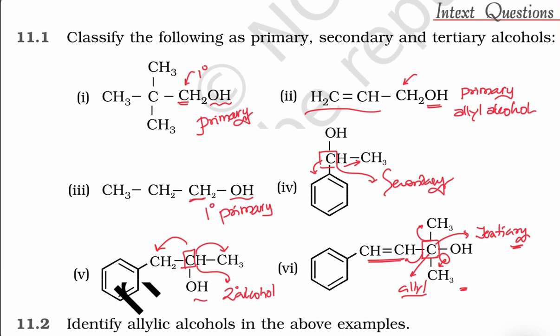This is a simple secondary alcohol. This one you can call benzyl alcohol — secondary benzyl alcohol. Benzyl means the carbon attached to the benzene ring is the one having the OH group, so it is benzyl as well as secondary. This is normal primary, this is also normal primary, and this is again an allyl primary alcohol.